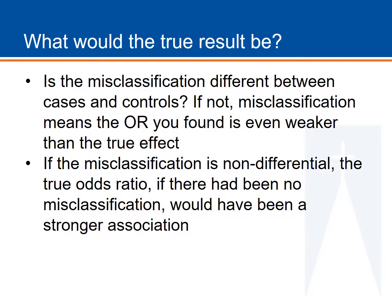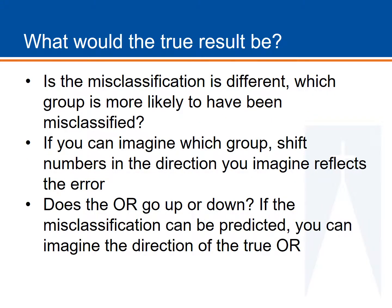The issue is whether the misclassification is different between cases and controls. If it is not different, the odds ratio becomes weaker than the true effect. So if there is misclassification that is not different between cases and controls, the true odds ratio would have been a stronger association than what you see in your results. If you can imagine the impact of misclassification, you can rearrange the numbers to see that even if the misclassification is differential, you can still predict whether it watered down the odds ratio or amplified it. In that case, the true odds ratio is either stronger or weaker than what you see.